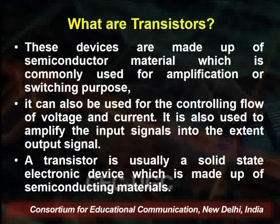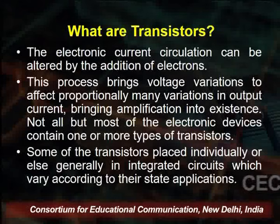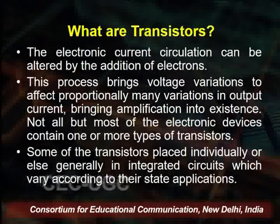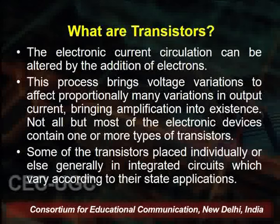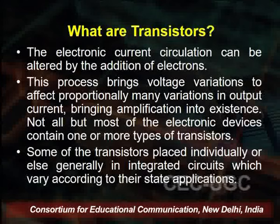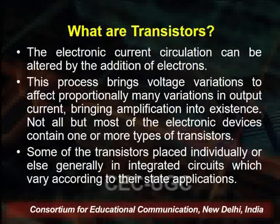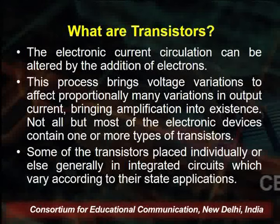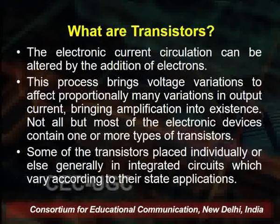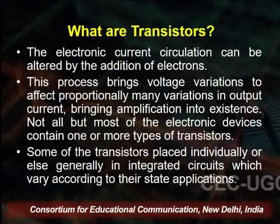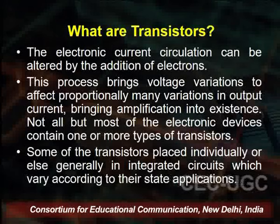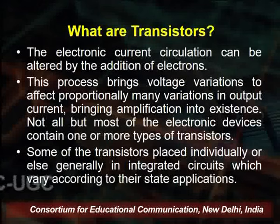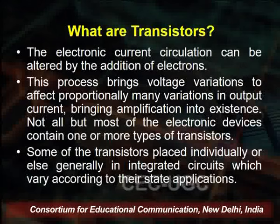The transistor is a solid-state electronic device made of semiconductor material. The electronic current circulation can be altered by the addition of electrons. In the transistor, we have a P-N junction where holes and electrons decide the movement of current. This voltage variation causes proportional variations in the output current, bringing amplification into existence. Most electronic devices contain one or more transistors, placed individually or in integrated circuits.